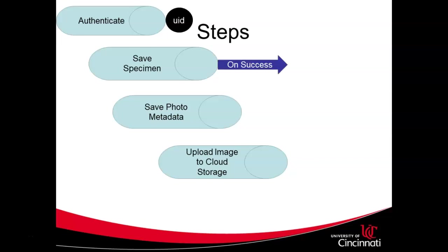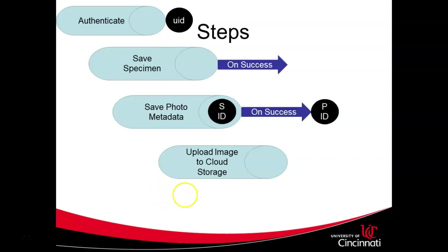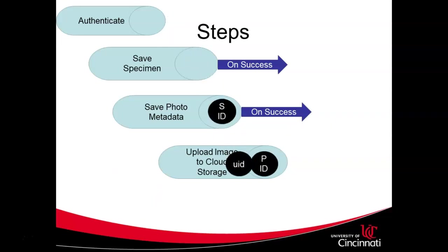Once we've authenticated, we can save our specimen, and what we get back is a specimen ID — a document reference generated by Firebase telling us where that specimen data was saved. This is the metadata about the specimen: text data like specimen ID, specimen name, latitude, longitude, and so on. We can then take that identifier and save photos associated with that specimen. This is a one-to-many relationship, so we tie all those photos back to that specimen ID generated by Firebase.